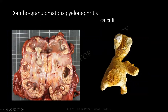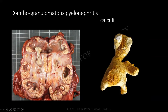Xanthogranulomatous pyelonephritis. You find that there will be yellowish areas which are seen. Typical of xanthogranulomatous pyelonephritis. It is actually a variant of chronic pyelonephritis in which you will be able to see large clear cells. And look at the multiple calculi. This is a typical staghorn calculus. And why it is staghorn? Because it is an image or it is a cast of the pelvicalyceal system. Therefore, it has got this kind of an appearance.